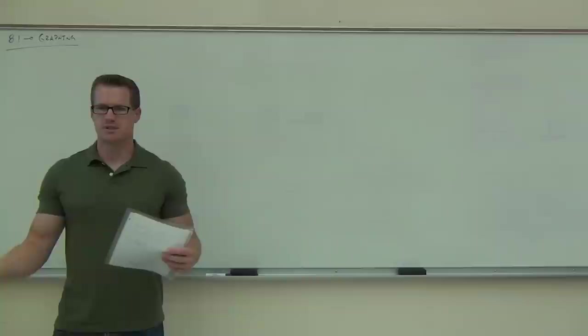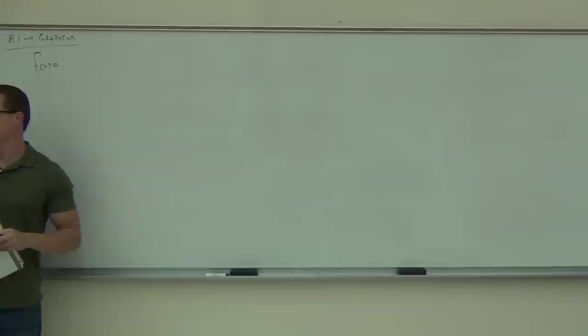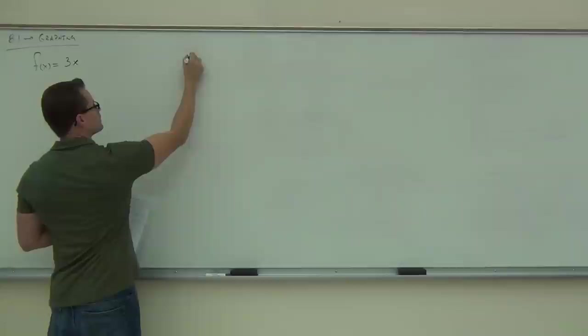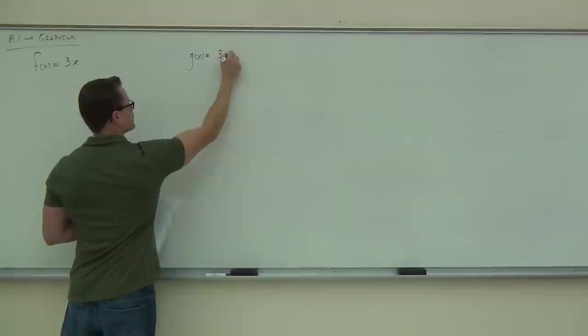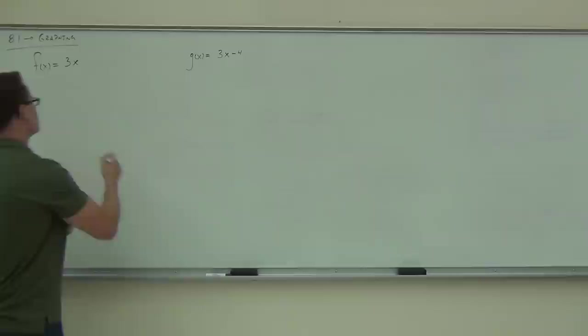In our first example, I'd like to graph a couple things. We're going to graph — if you're familiar with that notation, we've already had that in this class. It just means f of x; it means a function. This thing's going to make a graph for us. f of x equals 3x, and g of x equals 3x minus 4. What we're going to do is graph these functions on the same graph, and we're going to use some tables to make this up.